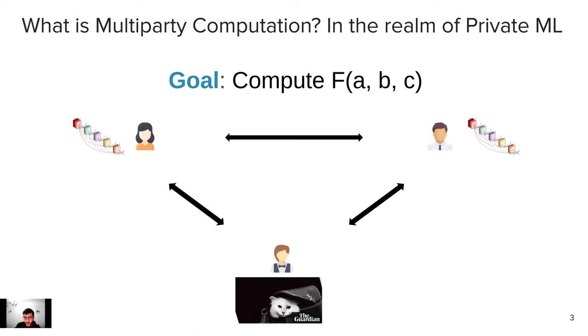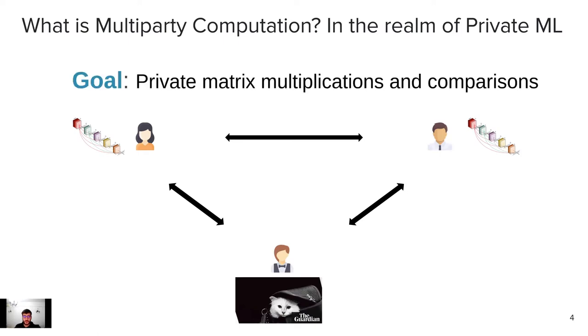In this case, Charlie would like to get the prediction of Alice and Bob's model without revealing the beautiful cat. So how are they going to do that? They're going to do that using multi-party computation. What does that mean to compute F of A, B, and C? It boils down to a bunch of private matrix multiplication and private comparisons. We're focusing on obtaining private matrix multiplications more efficiently. Alice and Bob hold the matrix A, which is secret, and Charlie also holds the matrix C, which is secret, and they want to get the product of these.